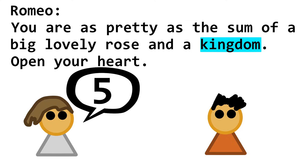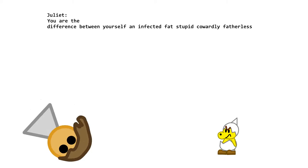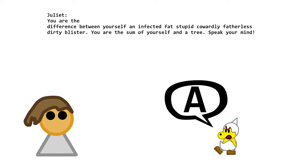If Romeo then tells Juliet 'open your heart,' Juliet will output her numerical value to the console. Similarly, if one character tells another 'speak your mind,' the character being spoken to would output their value as an ASCII character. So if one character tells another 'you are the difference between yourself and an infected, fat, stupid, cowardly, fatherless, dirty blister, you are the sum of yourself in a tree, speak your mind,' the character being spoken to would output an A.